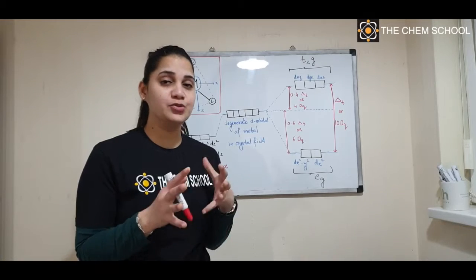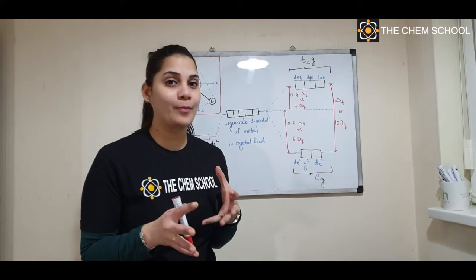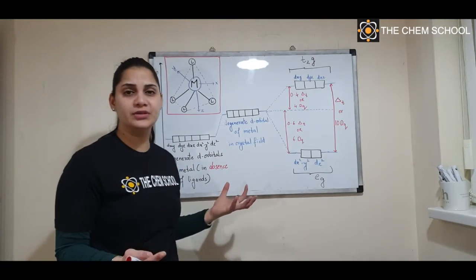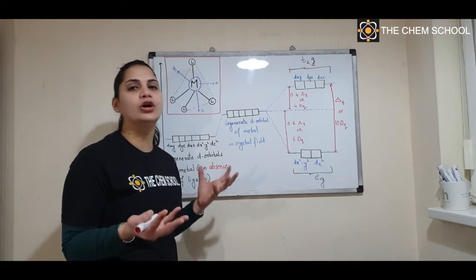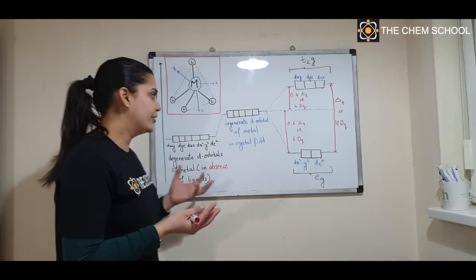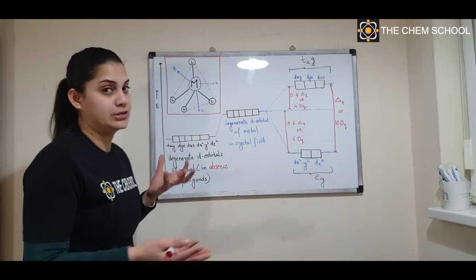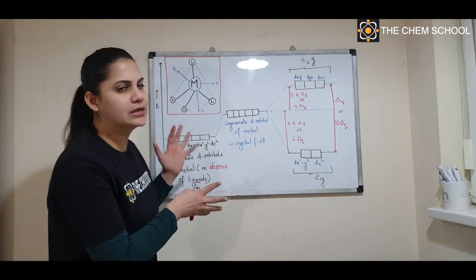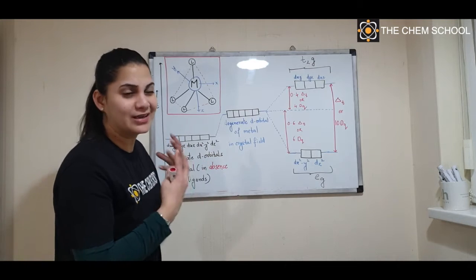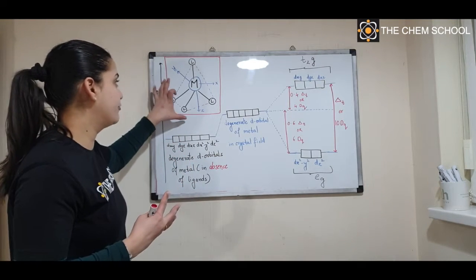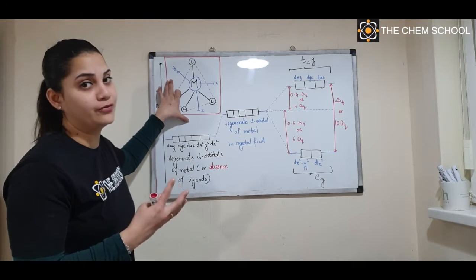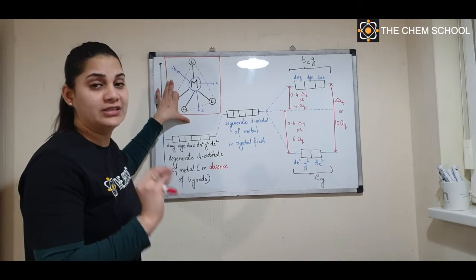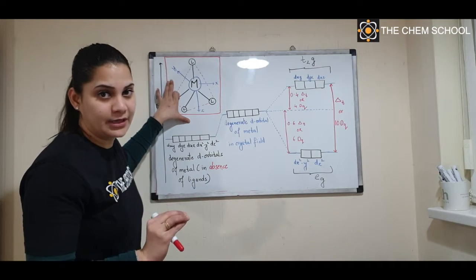Let's understand the splitting of d orbitals in tetrahedral complexes. It is almost similar to that of octahedral complexes in terms of concept, but when you talk about the splitting there is some difference. So let's start understanding it from the structure of the complex.